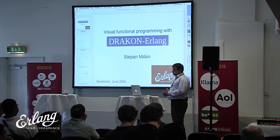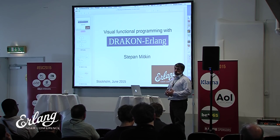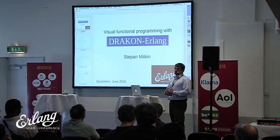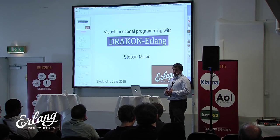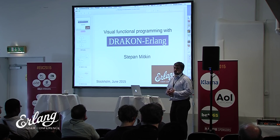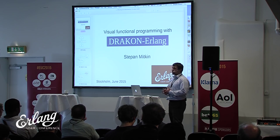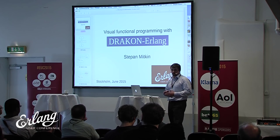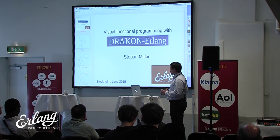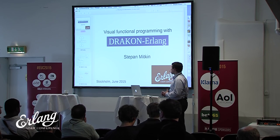DRAKON contains many rules and they together try to ensure that a diagram is easy to read. Such rules, for example: no line intersections. The takeaway from this talk is please never ever do line intersections if you draw any kind of diagram. Why? Because when lines intersect on a diagram, our brain starts thinking: do these lines actually touch? Or maybe one goes on top of another? We should not make the reader of the diagram think.